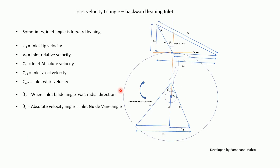For the inlet velocity triangle with forward leaning inlet, U2 is inlet tip velocity, V2 is inlet relative velocity, C2 is inlet absolute velocity, Ca2 is inlet axial velocity, and Cw2 is inlet whirl velocity. β2 is the wheel inlet blade angle with respect to radial, and θ2 is the absolute velocity angle equal to the inlet guide vane angle.